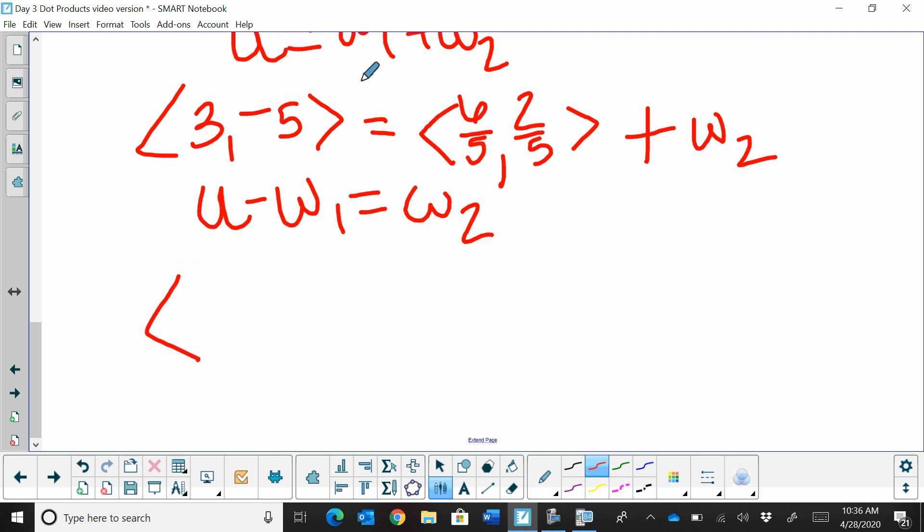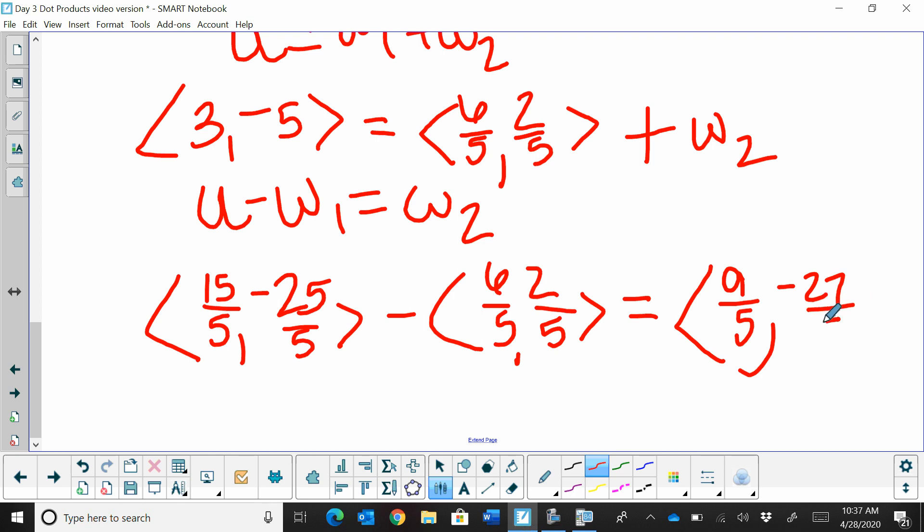Let's get a common denominator. What's that going to be? 15/5 is 3 and multiply that by 3, so -25/5, that's -5. Now we're going to subtract 6/5 and 2/5. So what's that going to give us for w sub 2? 15 minus 6 is 9/5, and -25 minus 2 is -27/5. And that is w sub 2 that we just calculated.